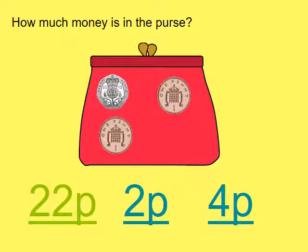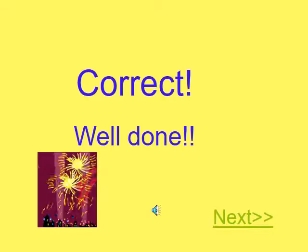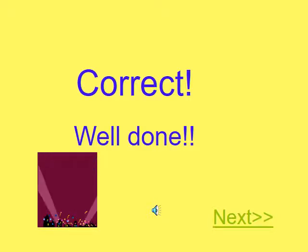Take a look carefully at the coins on the screen. We've got a twenty pence coin, a one pence coin and another one pence coin. How much is that all together? Make sure you count on from twenty. Twenty and one more is twenty-one and one more is twenty-two. Can you find the amount at the bottom? Yes, that's correct, it's twenty-two.